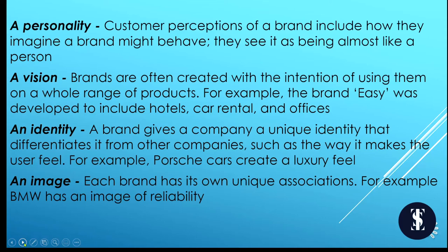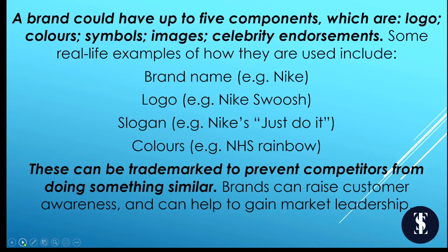A brand can be an identity — giving a company a unique identity that makes it different to others, and how it makes you feel. Porsche cars have a luxury feel. A brand can be an image — associations with a company; BMW, you think about reliability. A brand could have five components: logo, colours, symbols, images or celebrity endorsement. Think about the brand name — the word Nike; a logo — the Nike swoosh; a slogan — Nike's 'Just Do It'; or a colour — the NHS rainbow. These could be trademarked so other companies can't do the same thing, raising customer awareness and helping to gain market leadership.